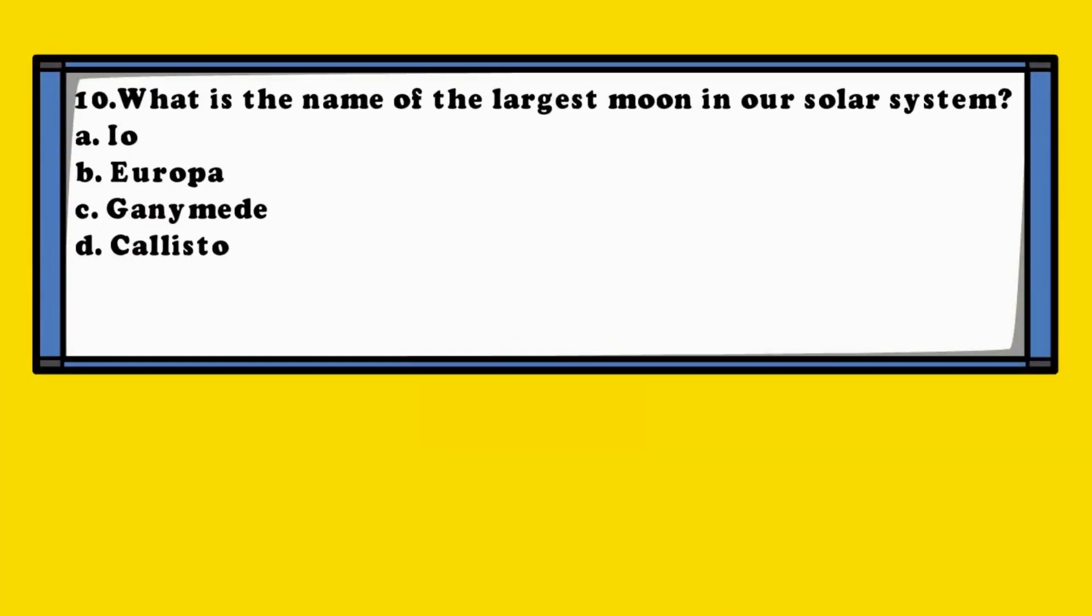Question 10. What is the name of the largest moon in our solar system? A. Io, B. Europa, C. Ganymede, D. Callisto.